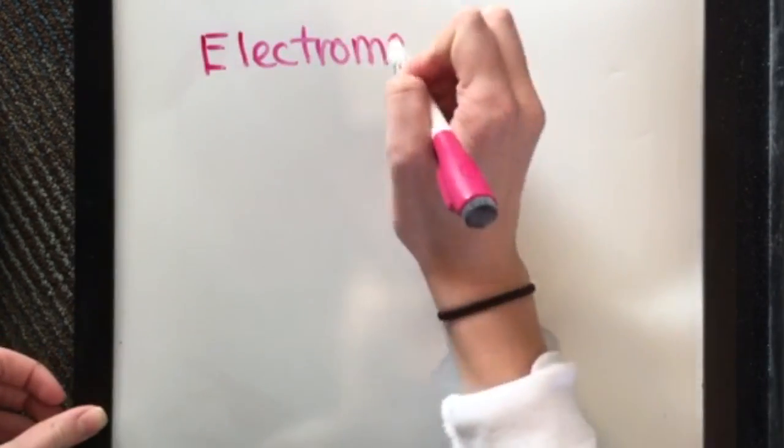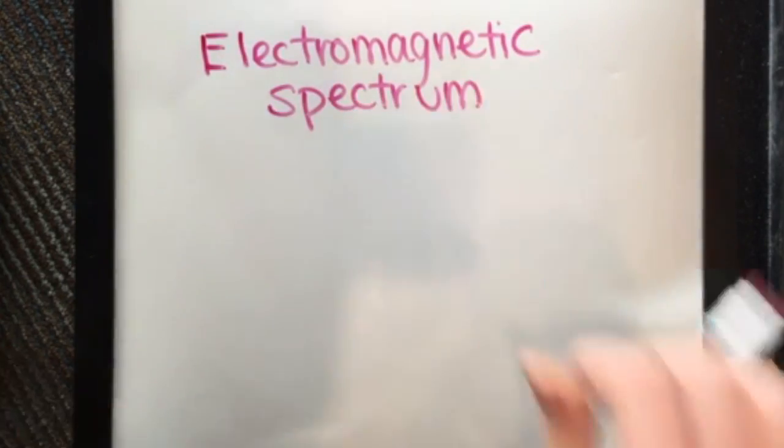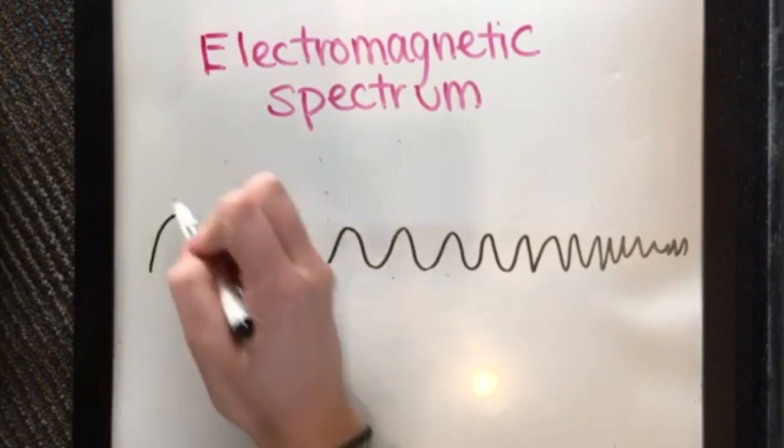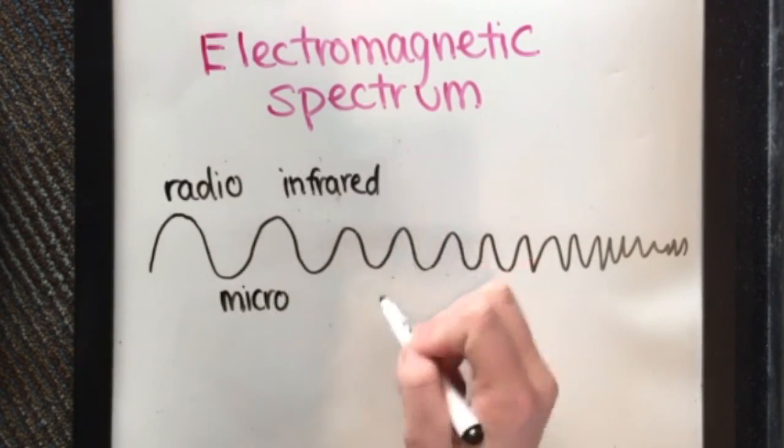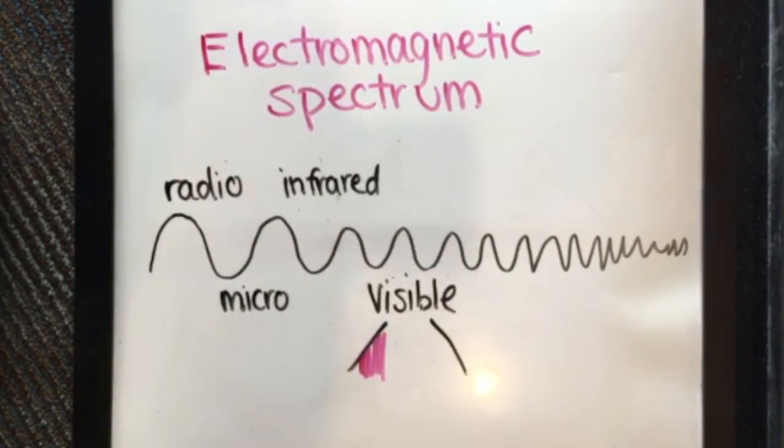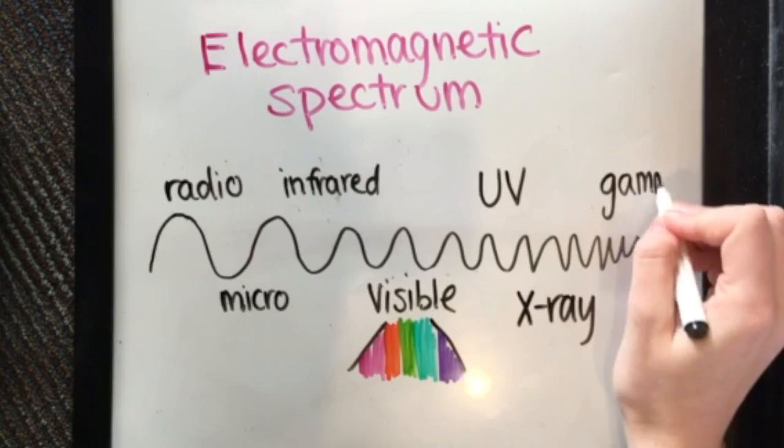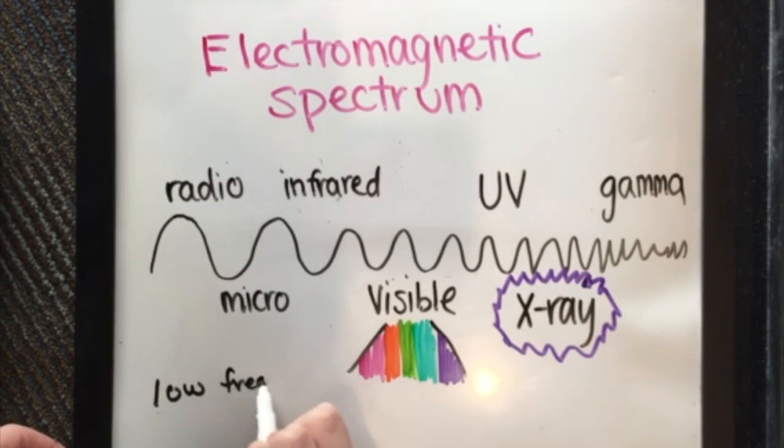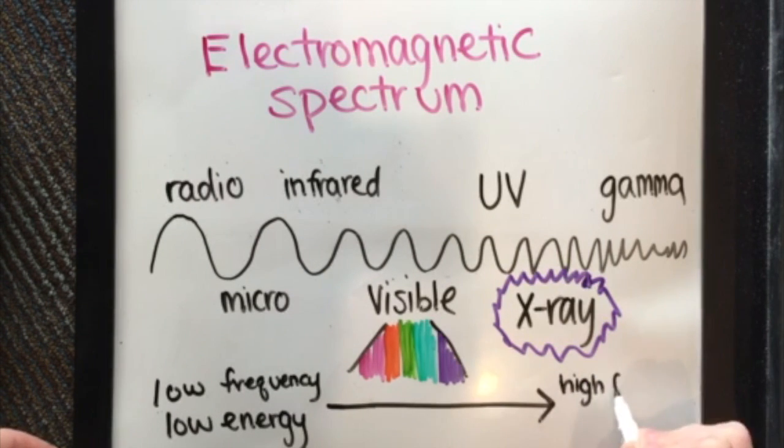X-rays are electromagnetic waves; they are part of the electromagnetic spectrum. The electromagnetic spectrum goes from radio waves, microwaves, infrared waves, visible light from red to purple, UV waves, x-rays, and gamma rays. The electromagnetic spectrum goes from low frequency and low energy levels to high frequency and high energy levels. Therefore, x-rays have high frequency and high energy.